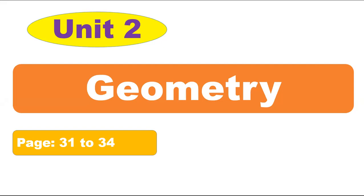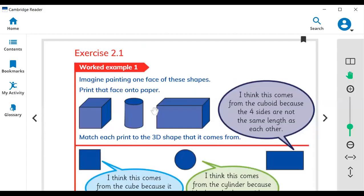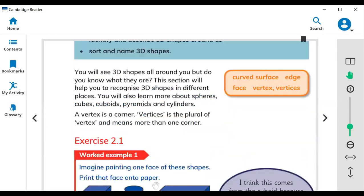Hello everybody, this is Bilal Ahmed. Today in math we started Unit 2. In Unit 2 you are going to learn about geometry — you are going to learn about 2D and 3D shapes. You will need pages 31 to 34, so here is the topic in your math learners book.